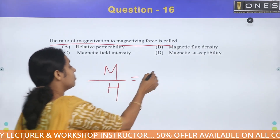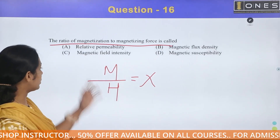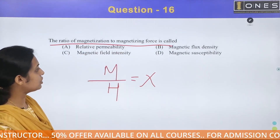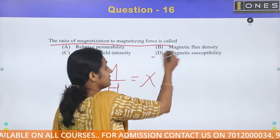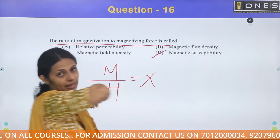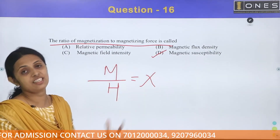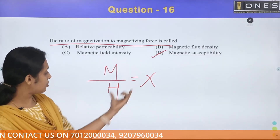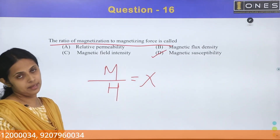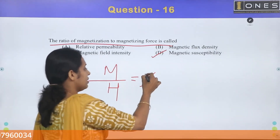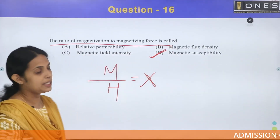M by H is called Susceptibility (χ). The ratio of Intensity of Magnetization to Magnetizing Force is called Magnetic Susceptibility. It is a measure of Magnetization in a body with respect to H. The answer is Magnetic Susceptibility — Option D.